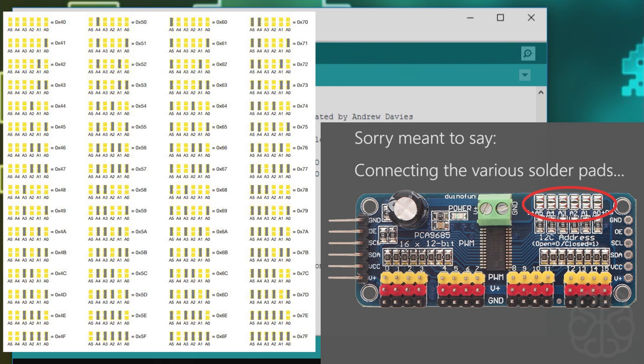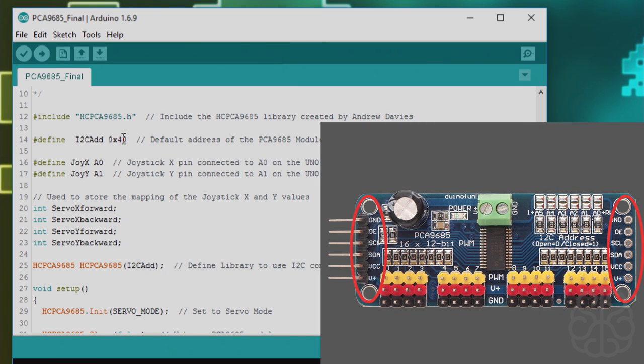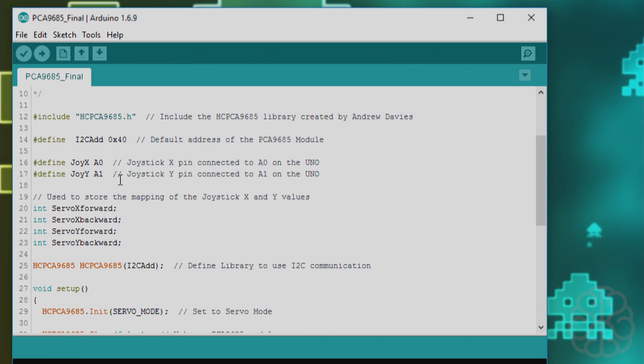If you look on the right and left side there are the same connections, so basically you could link two together and that way you would have the possibility to control up to 32 servos. We only have one so we're using this.